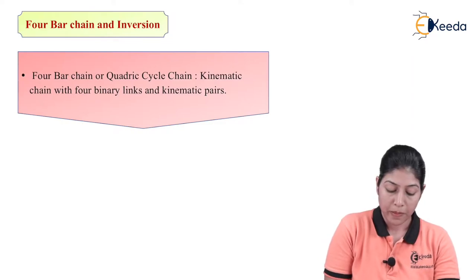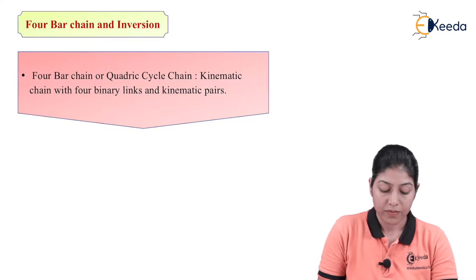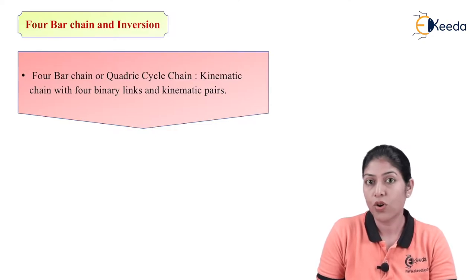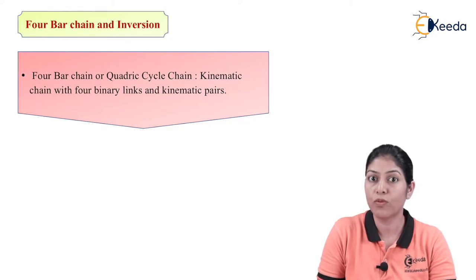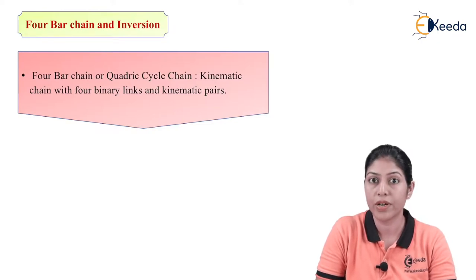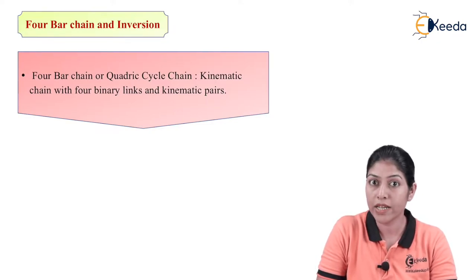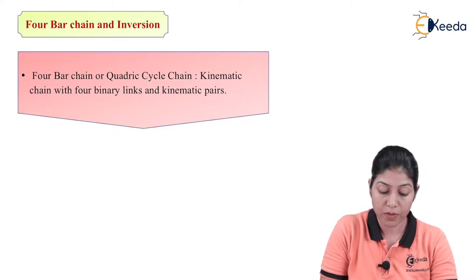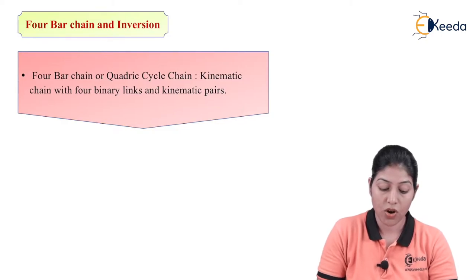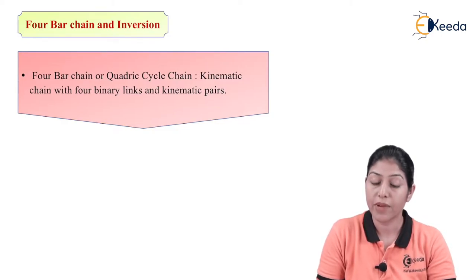In the 4-bar chain, when 4 links are joined together and it is forming a turning pair, that is called 4-bar chain. If one link of the 4-bar chain is fixed, it will convert into a 4-bar chain mechanism, and it is also called quadratic cycle chain or quadratic cycle chain mechanism. When no link is fixed, it will be a chain — quadratic cycle chain or 4-bar chain.